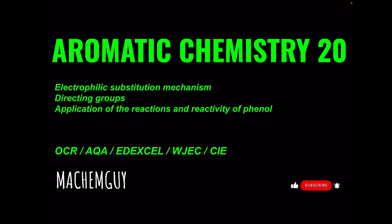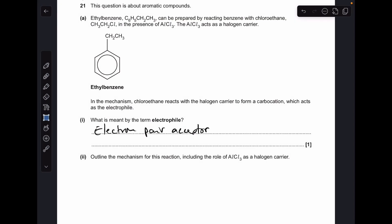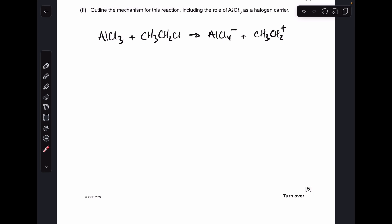Part A starts with a definition test: an electrophile is an electron pair acceptor. Then moving on to the mechanism, the first thing we're going to do is generate the electrophile, so that's this CH3CH2+ ion. That's formed by reacting the catalyst with the chloroethane, and it gives us these two ions here. We then bring in the benzene ring and the electrophile.